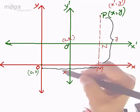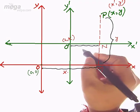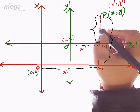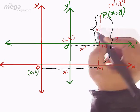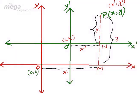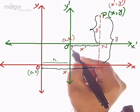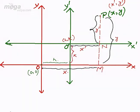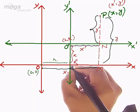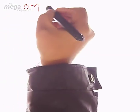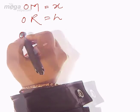The length from P to N becomes Y-dash. Since H,K is the coordinate of the new origin with respect to the X axis and Y axis, this length will be H and this length will be K. Taking this point as R, you get: OM = X, OR = H, O-dash N = X-dash, which is also equal to RM.